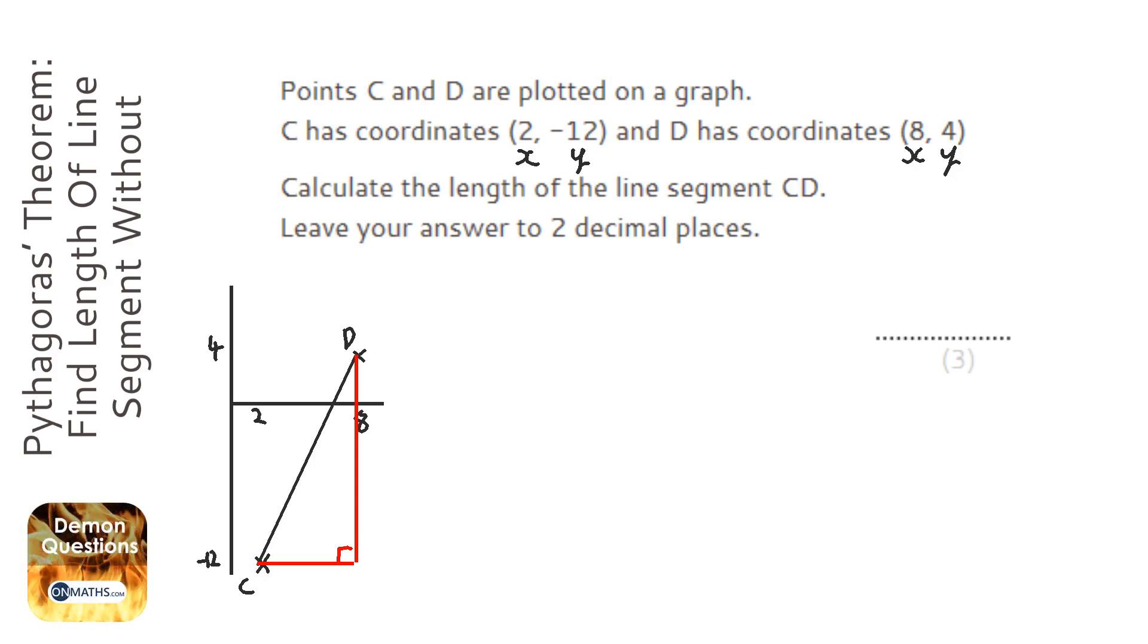And we've got to work out the two distances. Now the X distance is quite easy, 2 to 8. So 8 take away 2, that's going to be 6.